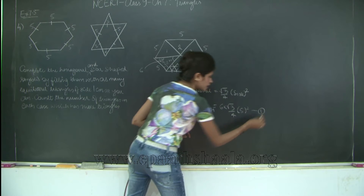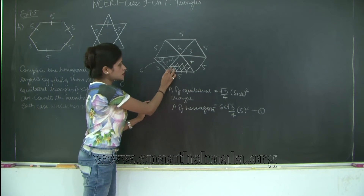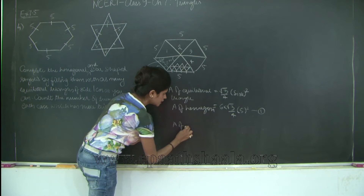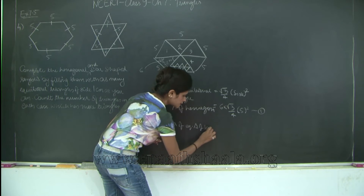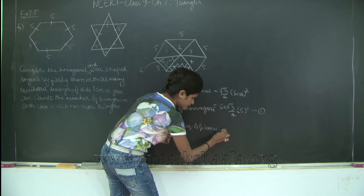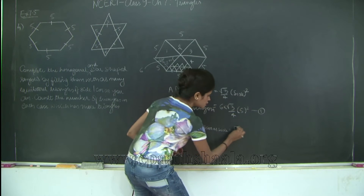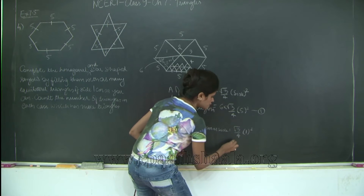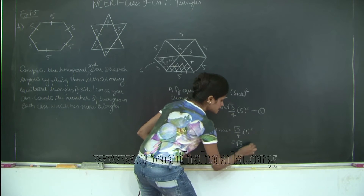I will mark this as equation 1. I will find the area of each small triangle. So the area of an equilateral triangle of side 1 centimeter will be (√3 / 4) × side² = (√3 / 4) × 1² = √3 / 4. I will mark this as equation 2.